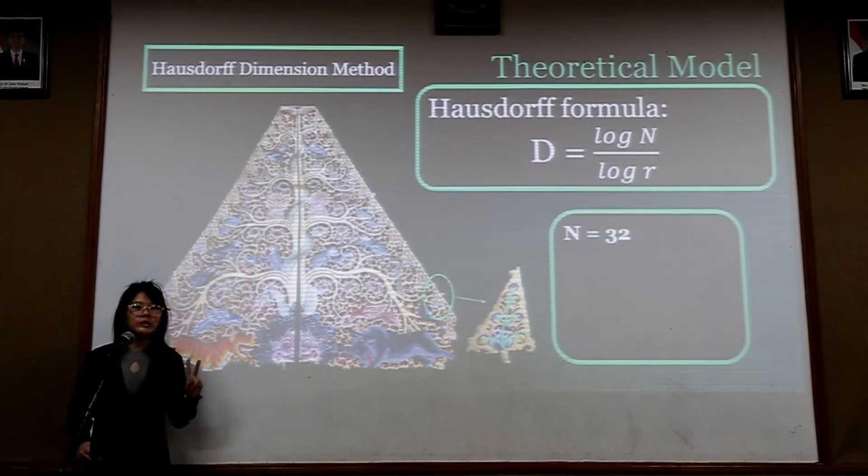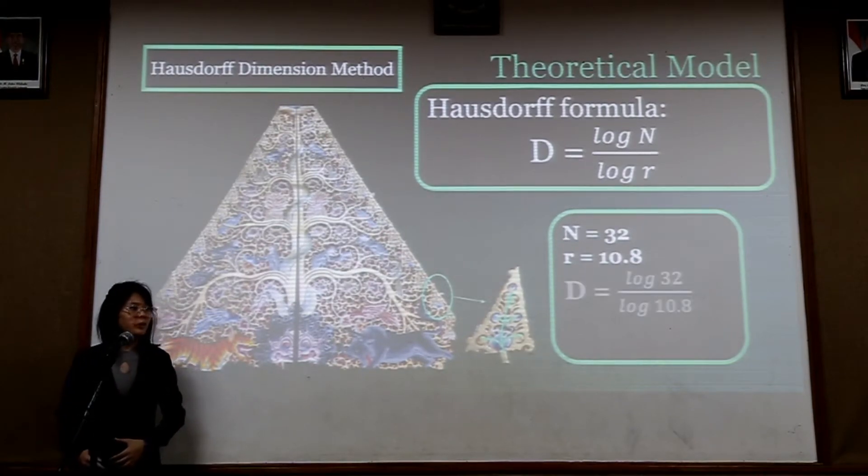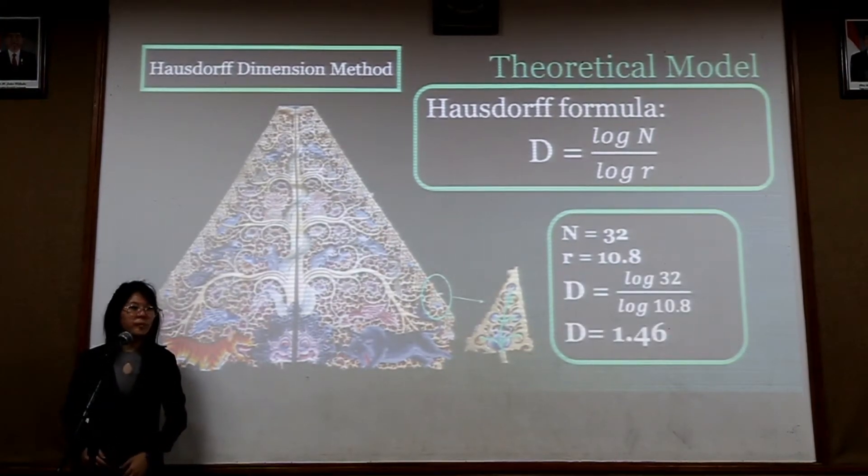There are 32 self-similars in this tree of life, and the ratio is 10.8. So the fractal dimension is 1.46.